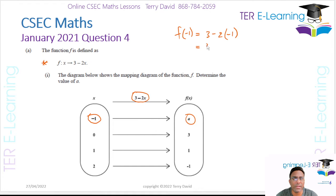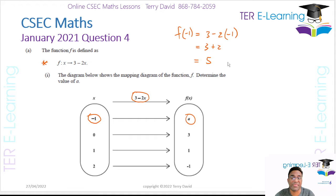This is going to be 3, and then minus 2 multiplied by minus 1 becomes plus 2. So therefore this answer is going to be 5. So therefore e is equal to 5.